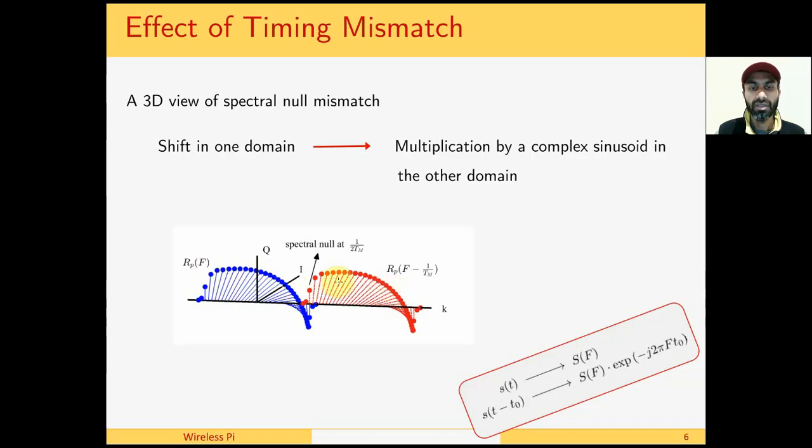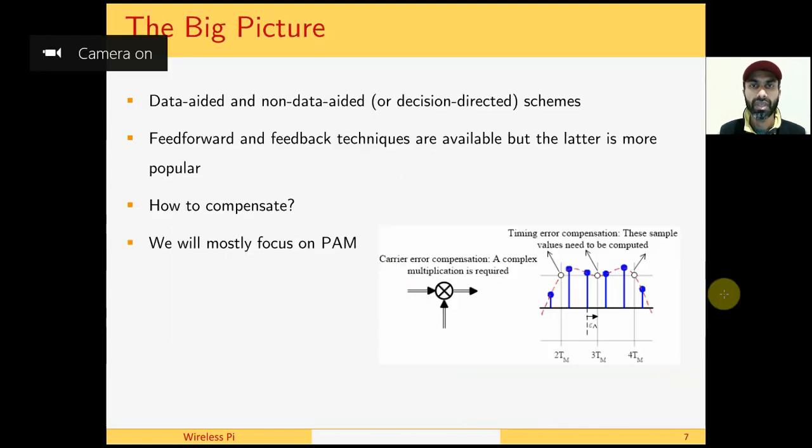Now this is a spectral alias, so this is a representation of what we have here. The result is that this is rotating in one direction, this is rotating in the other direction, and you can see here you can have a spectral null. As far as timing synchronization is concerned...